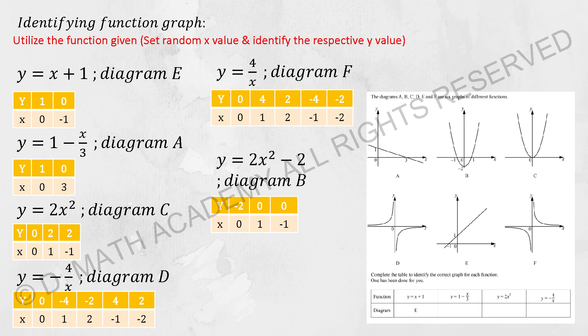For the next one, we have Y equals 1 minus X over 3. Same thing, I substitute in 1 and 0 at Y's position and I get X as 0 and 3. This one was actually represented using graph A.